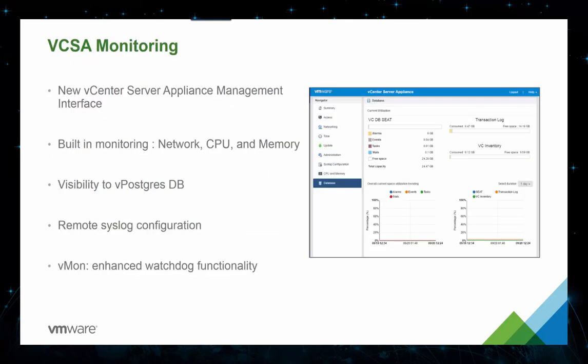The new vCenter Server Appliance management interface is still accessed via port 5480 for any vCenter Server or Platform Services Controller appliances. This refreshed UI now includes additional resource utilization graphs to provide a simple-to-consume visualization of CPU, memory, disk, and database metrics. The new vCenter database monitoring screen provides insight into the Postgres SQL database disk usage to help prevent crashes. New default warnings in the vSphere web client alert administrators when the database is getting close to running out of space, and a graceful shutdown mechanism at 95% full prevents database corruption. Customers can also configure syslog in this improved VAMI interface.